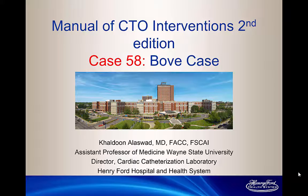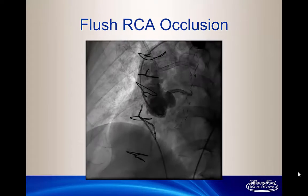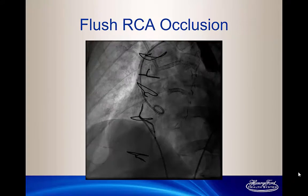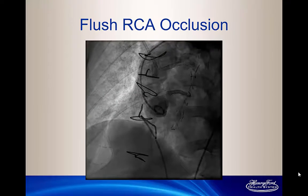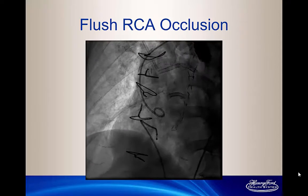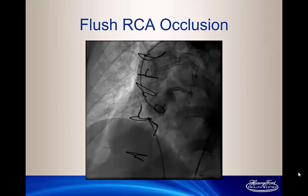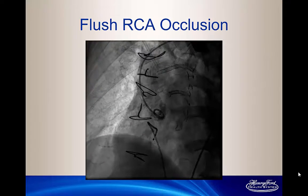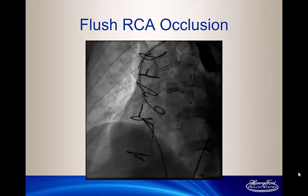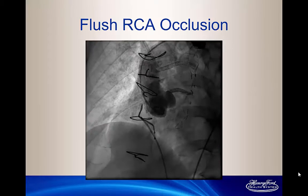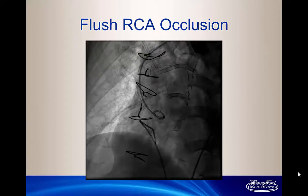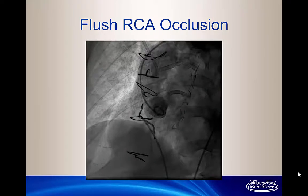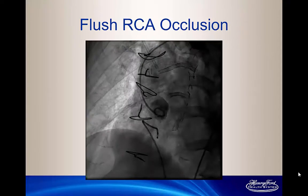Thanks, Manos, for giving me this opportunity to present one of the cases we did recently at Henry Ford Hospital. In the clinical background, this is a patient who had significant valvular heart disease, already had a CABG. He's in his 50s. His creatinine is actually 2.7, and he received TAVR. The Structural Heart team sent him to us because he continued to have angina, and he had a CTO of the RCA.